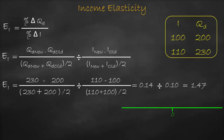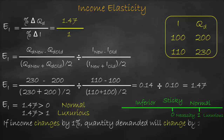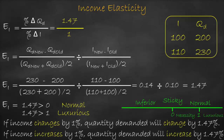This gives us 0.14 divided by 0.10, which equals 1.47. The benchmark for income elasticity is zero: if zero, sticky; bigger than zero, normal; lower than zero, inferior. For normal goods, between 0 and 1 is necessity, bigger than 1 is luxurious. Income elasticity is 1.47 — bigger than zero so it's a normal good, and since 1.47 is also bigger than 1, it is a luxurious good. Interpretation: income elasticity equals 1.47 divided by 1, so if income changes by one percent, quantity demanded will change by 1.47 percent, or if income increases by one percent, quantity demanded will increase by 1.47 percent.